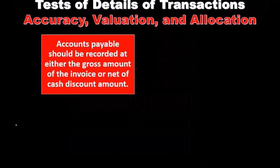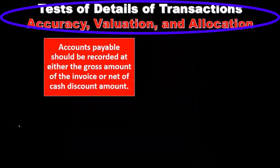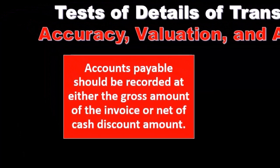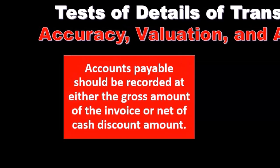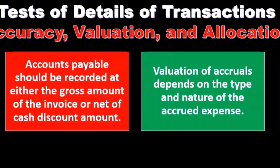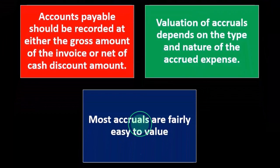Next, we're going to take a look at the assertion of accuracy, valuation, and allocation. Accounts payable should be recorded at either the gross amount of the invoice or net of the cash disbursement amount. Valuation of accruals depends on the type and nature of the accrued expenses. Most accruals are fairly easy to value.